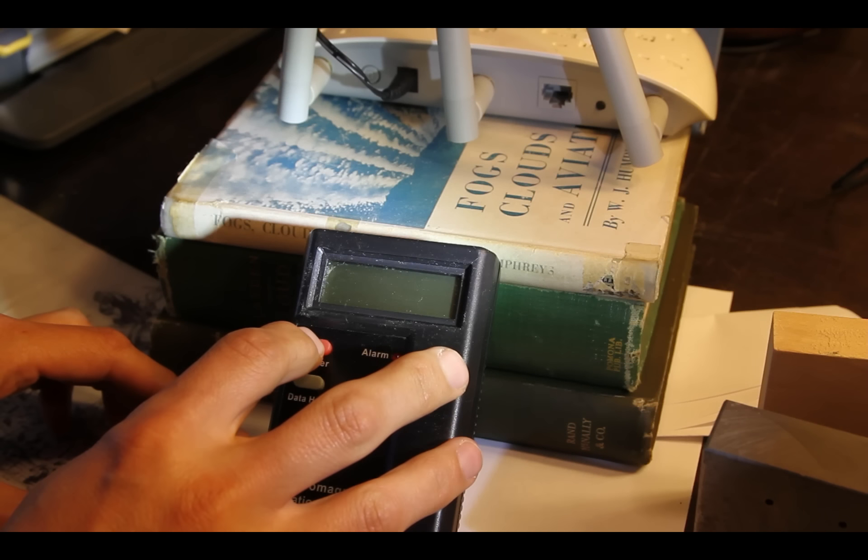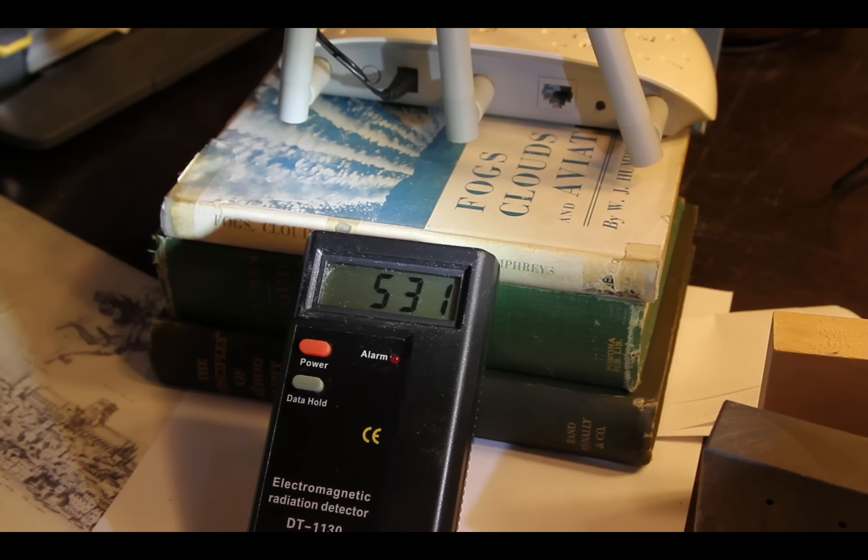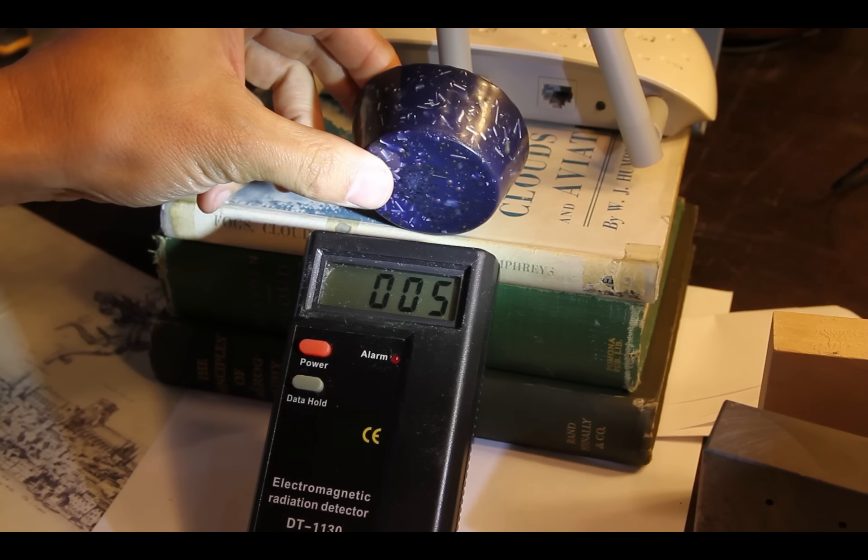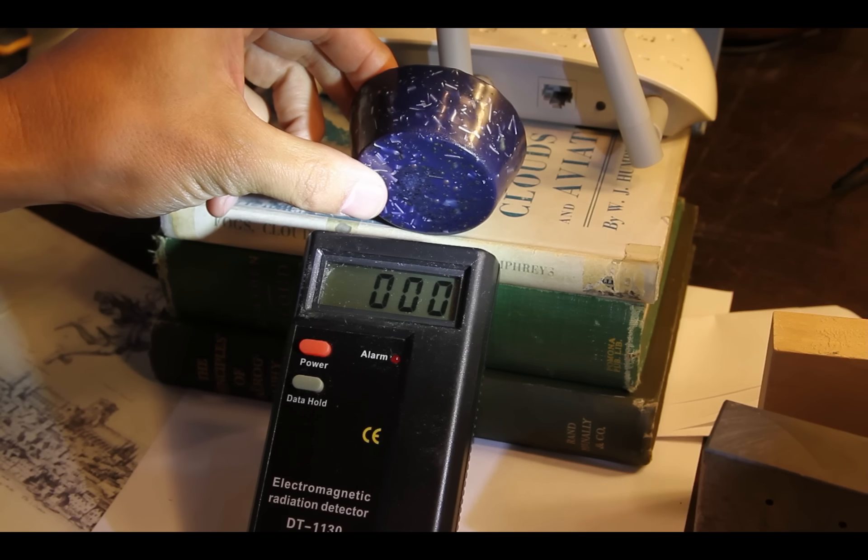So let me turn this on here. Now I've got this pointing at my Wi-Fi router here. And so the question is, if I put this orgonite in between the meter and the router, will the orgonite block it? Yes it does. It goes down to zero.